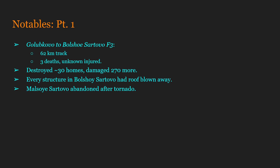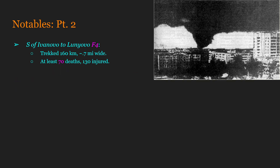Our star of the show is the South of Ivanovo to Luniovo F4. I only recently learned while researching this outbreak that the European weather service downgraded this tornado from F5 to F4, I believe in 2019. That means they have information about this tornado that I couldn't find, which is frustrating because I want to know why — this tornado definitely caused what in my opinion looks like F5 damage, as we'll see. We do actually have a photograph of this tornado — quite a menacing-looking beast in black and white. It tracked a very impressive 160 kilometers and reached around 0.7 miles wide.